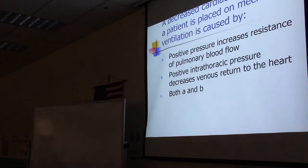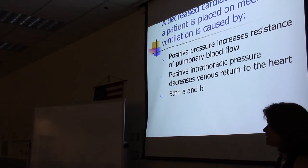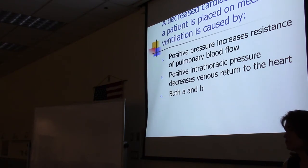Quiz question: A decreased cardiac output when a patient is placed on mechanical ventilation is caused by A — positive pressure increases resistance of pulmonary blood flow, or B — positive intrathoracic pressure decreases venous return to the heart. Both A and B are correct. Positive pressure in the chest squeezes pulmonary vessels and compromises blood flow returning to the heart, resulting in lower blood pressure and lower cardiac output.